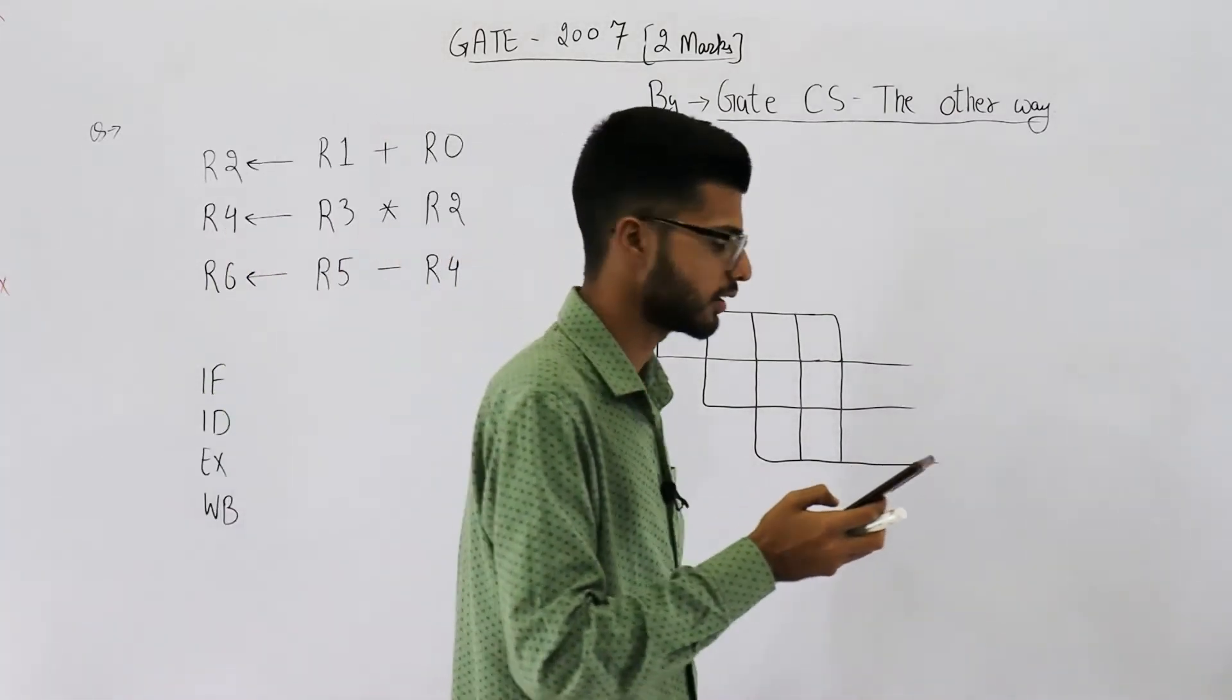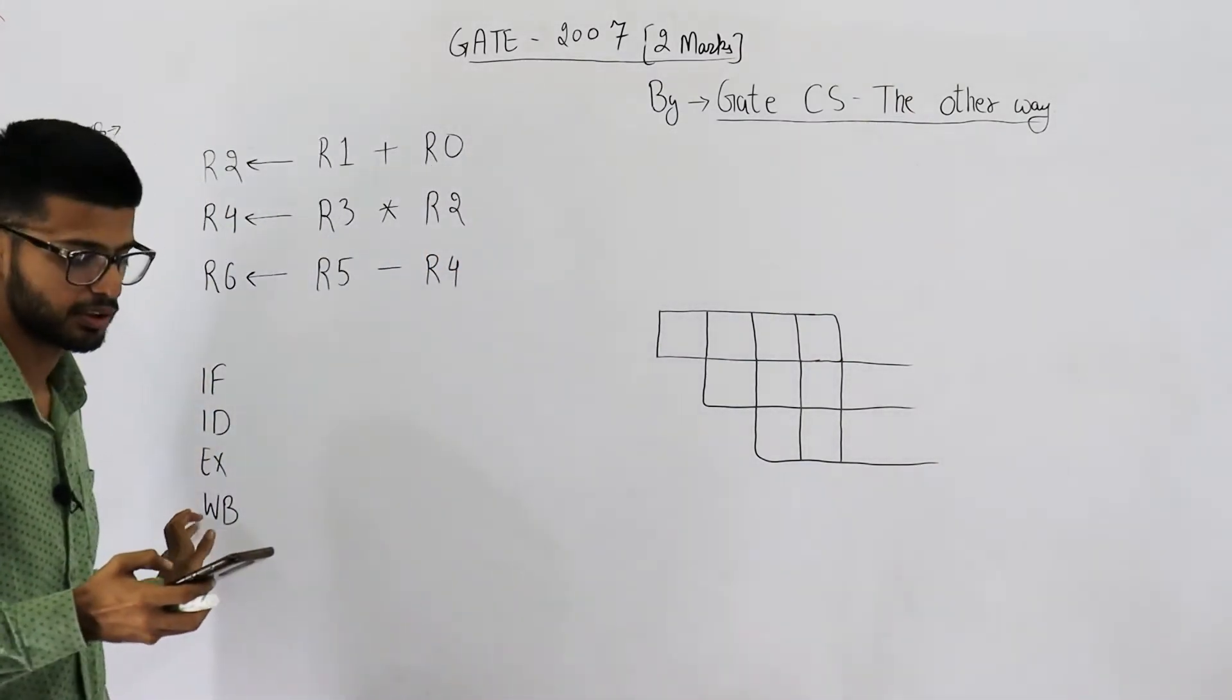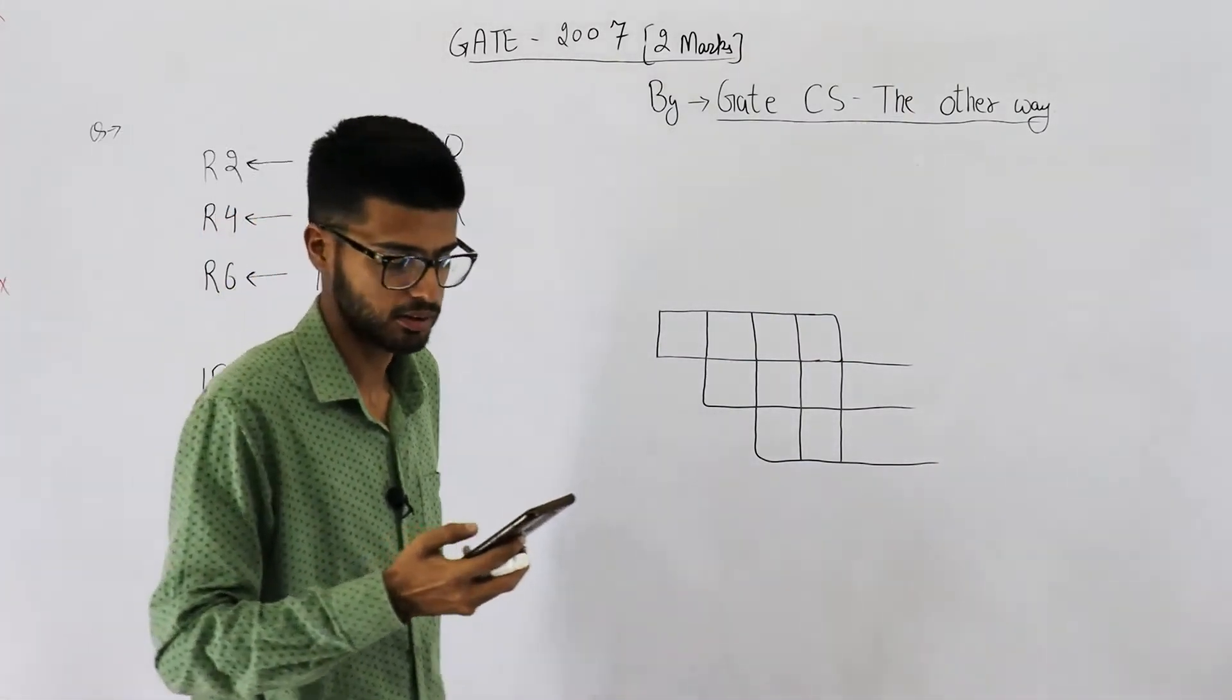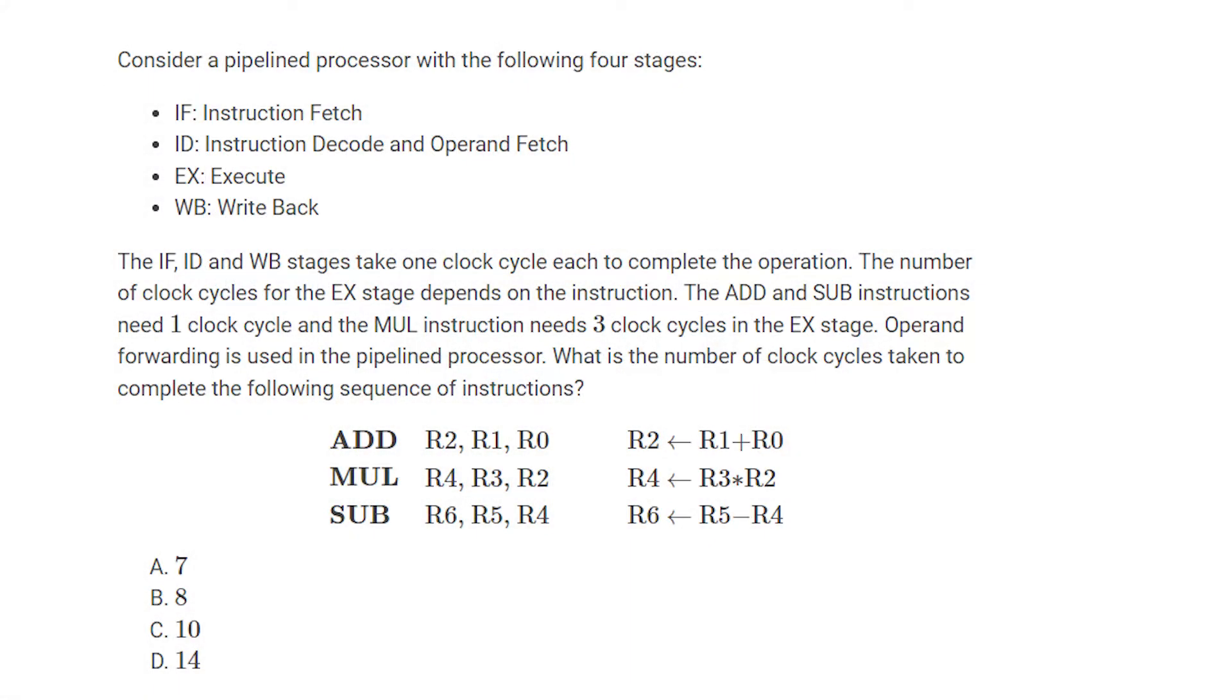They've also explained the four stages of pipeline. Let's have a look at the statement: consider a pipeline processor with the following four stages: instruction fetch, decode and operand fetch, execute, write back.